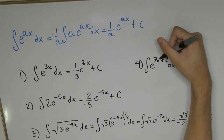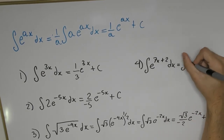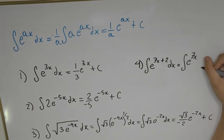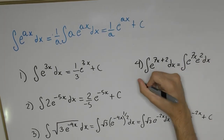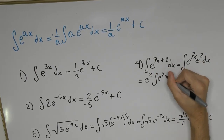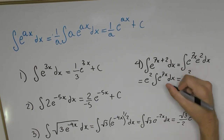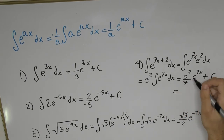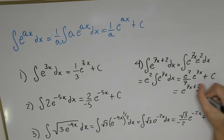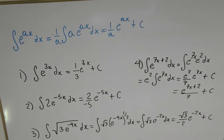What if the power has an extra constant added to it? We use the property of exponential functions that lets us split it into a product of two exponentials: e^(7x) multiplied by e^2, times dx. Since e^2 is just a constant, we bring it to the front of the integral, leaving e^(7x) dx. Applying the formula gives e^2 over 7 · e^(7x) + c, and simplifying, we combine the exponents: e^(7x+2) divided by 7, plus c.